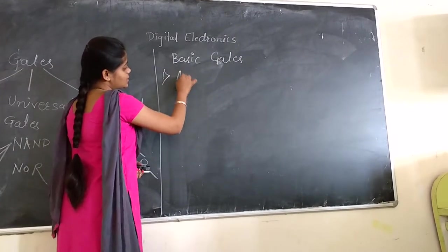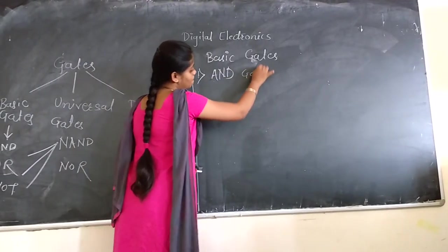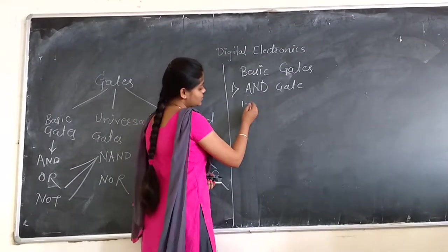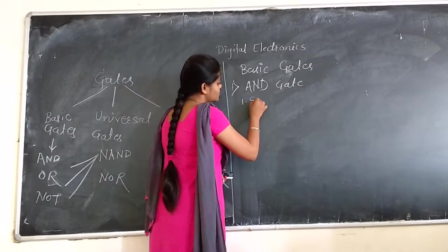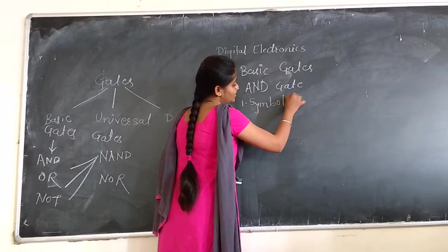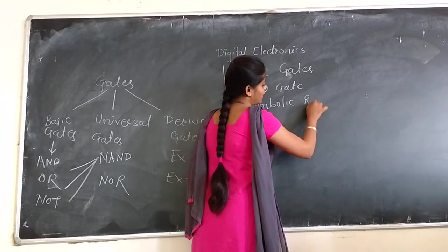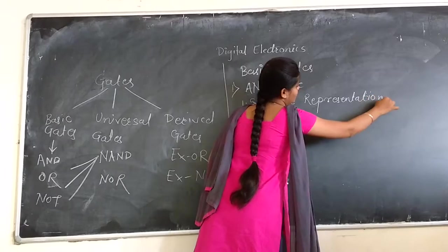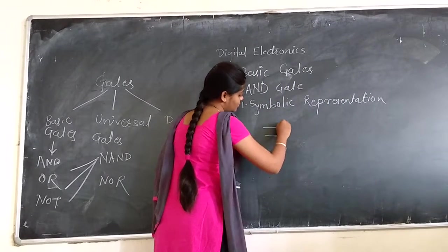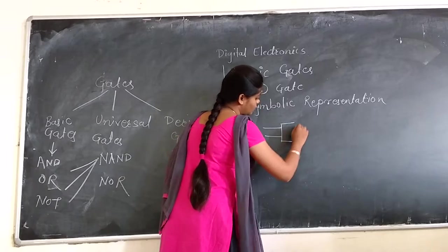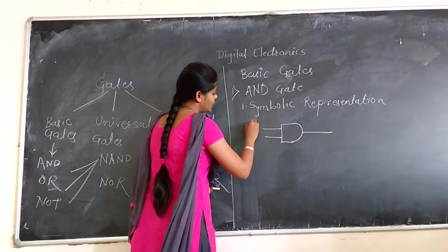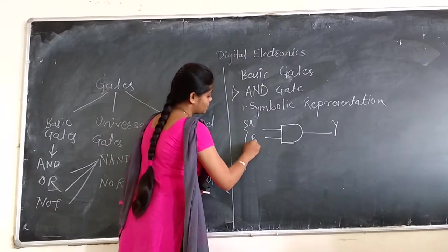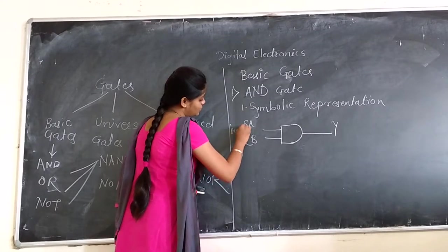First one is AND gate. First thing you should know: the symbolic representation of AND gate. AND gate has two inputs and one output. We can label both inputs as A and B, and output as A times B. You can say this is input and output.